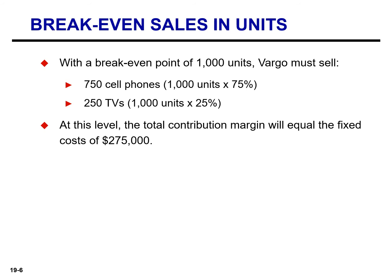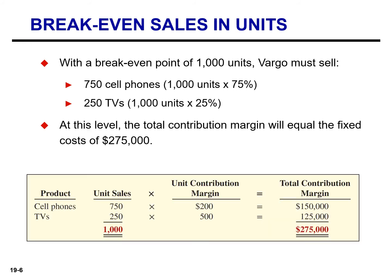At this level of sales, the total contribution margin will equal the fixed cost of $275,000. If we sell 750 cell phones at a $200 margin, we generate $150,000 of contribution margin. If we sell 250 TVs at a $500 margin, that generates $125,000 of contribution margin. Combined, selling 750 cell phones and 250 TVs yields a total contribution margin equal to the fixed cost — and that is the break-even point.